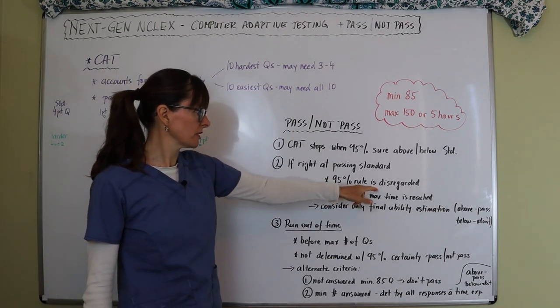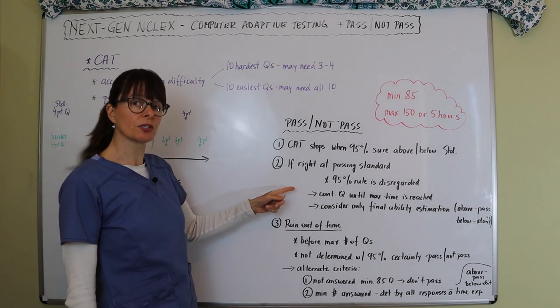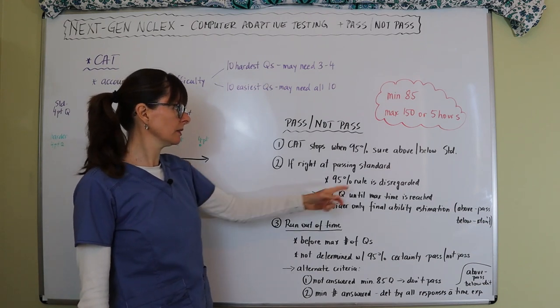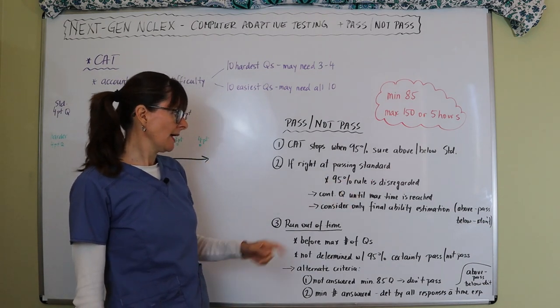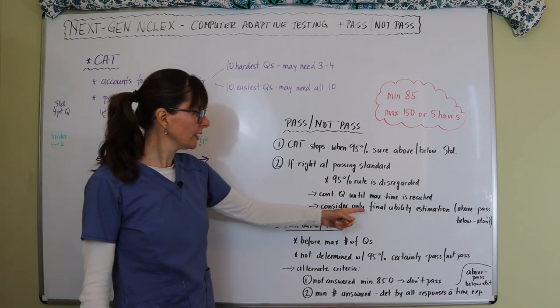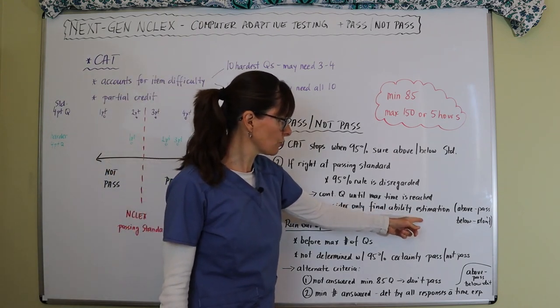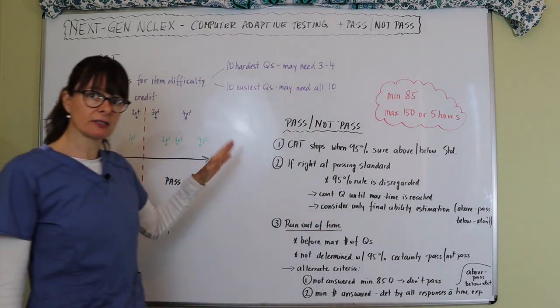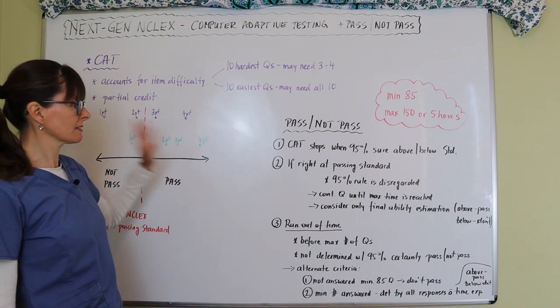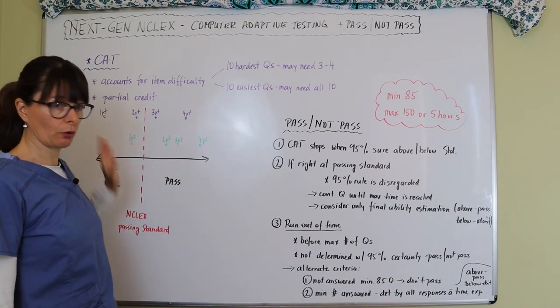Then the 95% rule is disregarded and you'll continue to get questions until the maximum time is reached. They'll consider only your final ability estimation. If you're above in these final questions, you pass. If you're below, you don't pass.